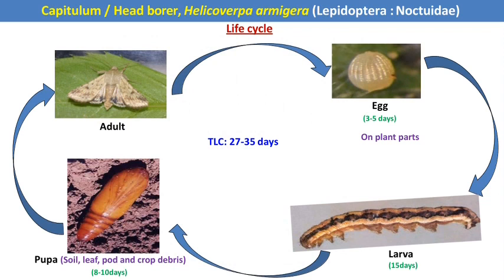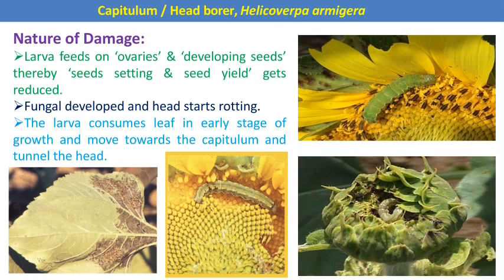From early instar to late instar, the larva shows color variation, and this is one of the major characteristics of the caterpillar of Helicoverpa armigera. After the final instar, the larva goes into pupation, which takes place in soil, on a leaf, on a pod, or on crop debris. The concept is how Helicoverpa armigera feeds on the heads of the sunflower crop and damages yield.